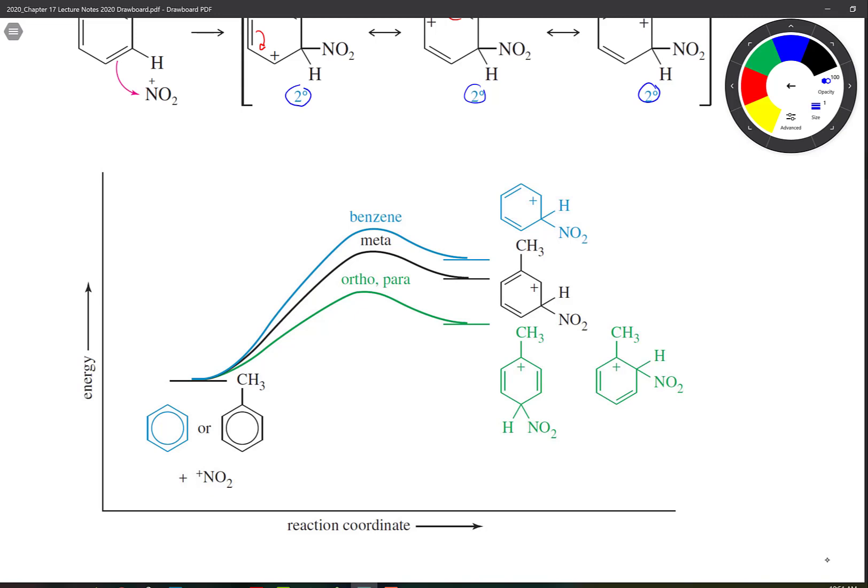Here you have your benzene or your toluene, essentially, here. So when we look at these molecules, for meta, just by benzene by itself, that has the highest activation energy.